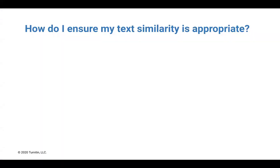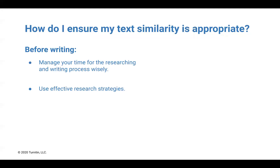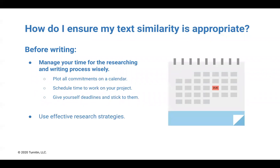So when working on an assignment that is expected to have some text similarity, how can we ensure that it is appropriate? This process actually begins before you start to write, when you make a plan for managing your time. Use a calendar to plot all of your commitments, whether they are personal or for school or work, and then schedule recurring time to work on your project. Consider chunking the assignment into manageable tasks that you will complete in sequence over time. Ultimately, give yourself deadlines and stick to them.